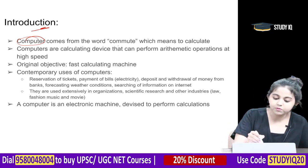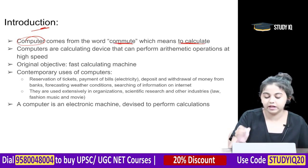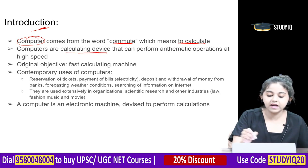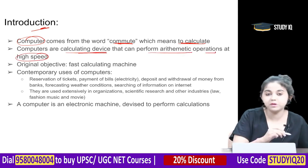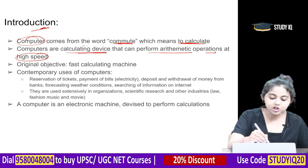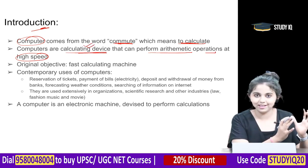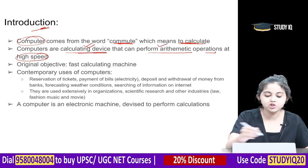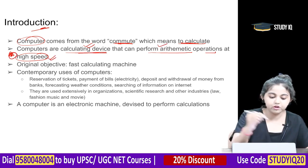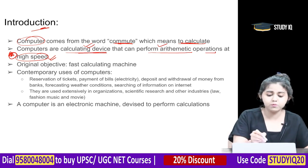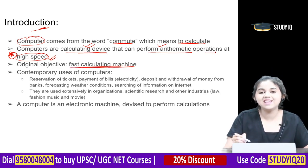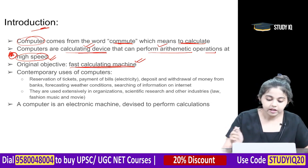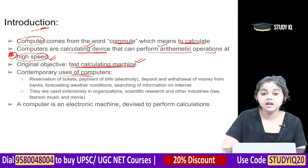Computer comes from the word 'compute' which means to calculate. Computers are a calculating device that can perform arithmetic operations at high speed. That is a very important definition of computers. The original objective of computers was to provide a fast calculating machine.